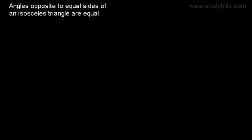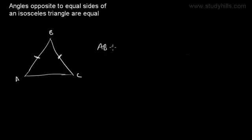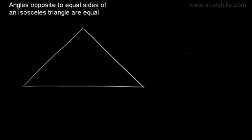We will prove that angles opposite to equal sides of an isosceles triangle are equal. Isosceles triangles are triangles in which two sides are equal. This is an example of an isosceles triangle in which two sides are equal — here side AB is equal to side BC. Now we will prove that angles opposite to equal sides of an isosceles triangle are equal.